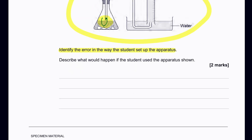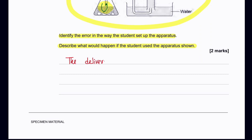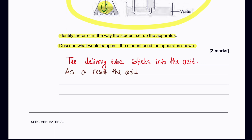Identify the error and describe what would happen. The delivery tube is submerged into the acid, so the acid would leave the flask through the delivery tube rather than gas being collected. The acid would leave the flask through the delivery tube.